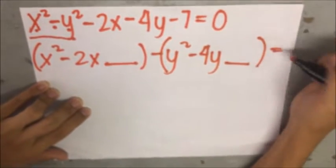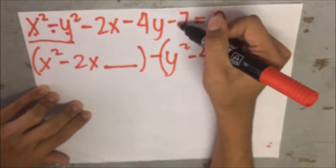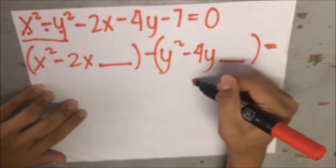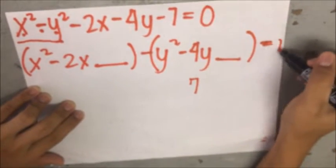Then, we need to transpose the given constant to the other side, which gives us positive 7, right there.